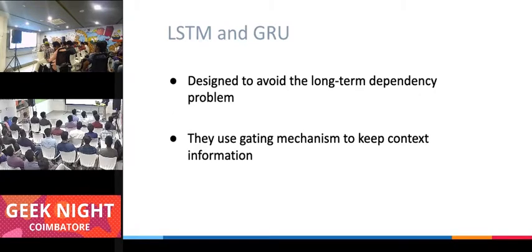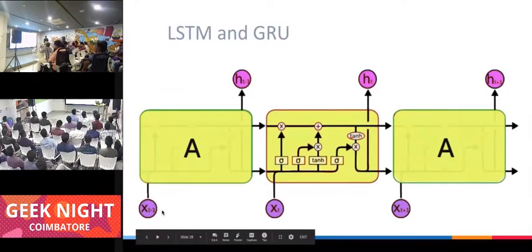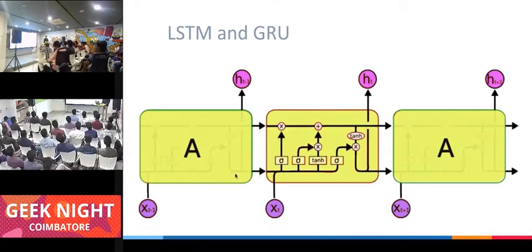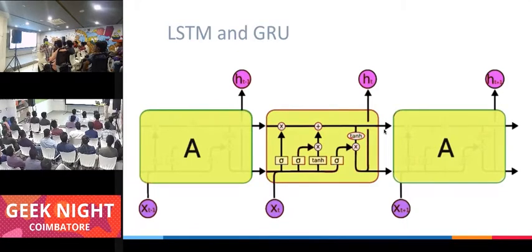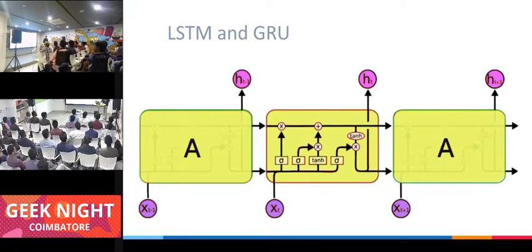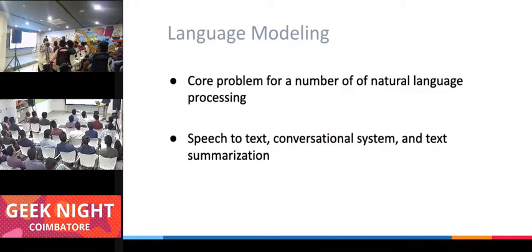LSTMs use a gating mechanism — gates are zeros and ones. In a normal RNN, computation flows through from one layer to the next. In an LSTM, there's an extra memory cell line going through the top, shared between all units. If the model sees 'brown,' it sets the gate to 1. When it later sees 'shepherd,' since the gate for 'brown' was set, it predicts accordingly. This is learned by the model after many epochs.